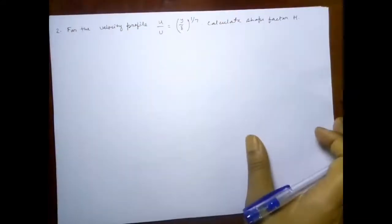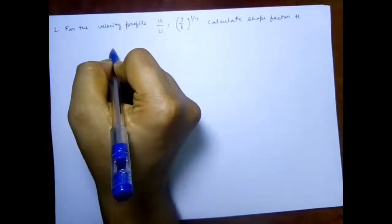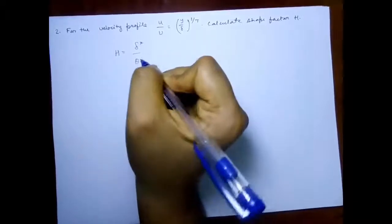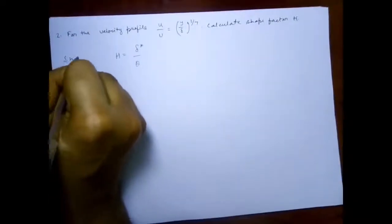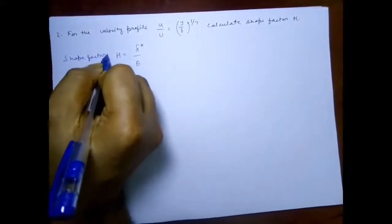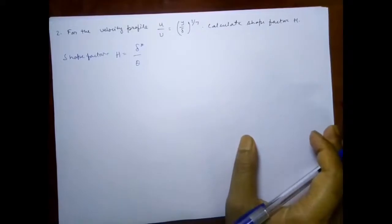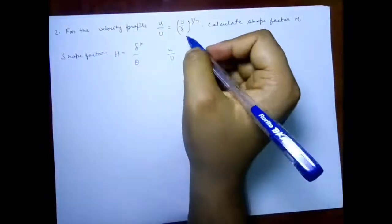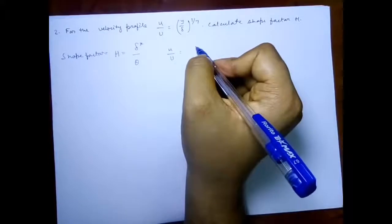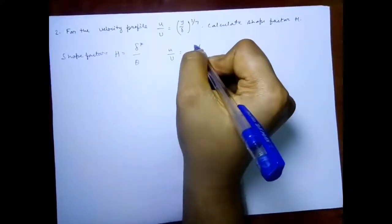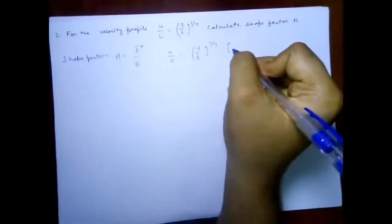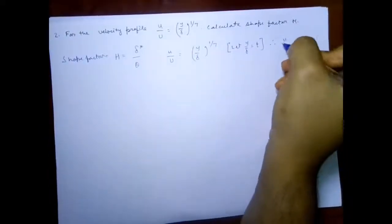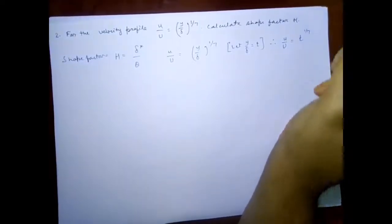We need to know the shape factor H, which is the ratio of displacement thickness to momentum thickness: H = δ*/θ. We are given u/U = (y/δ)^(1/7). Let t = y/δ, so u/U = t^(1/7).